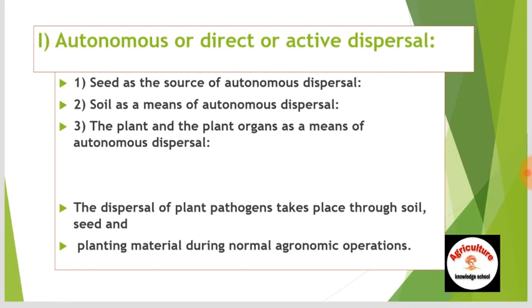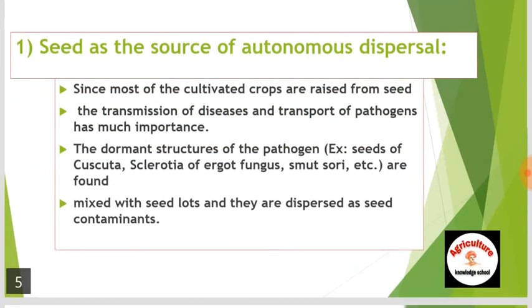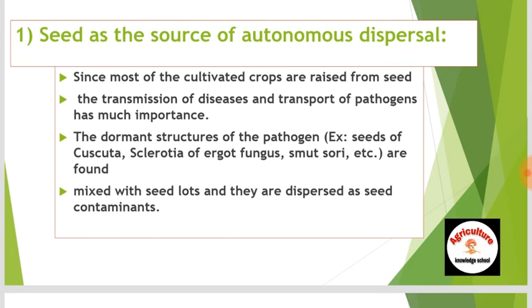Autonomous or direct or active dispersal happens in three ways: first is seed as the source of autonomous dispersal; second is soil as the means of autonomous dispersal; and third is plant and plant organs as a means of autonomous dispersal. The dispersal of plant pathogens takes place through soil, seed and planting material during normal agronomic operations.